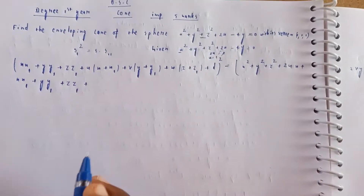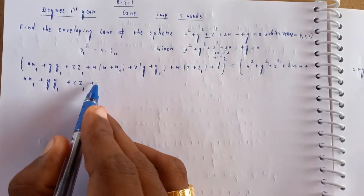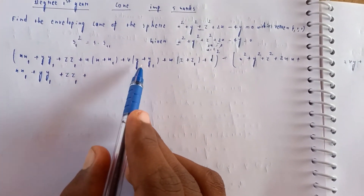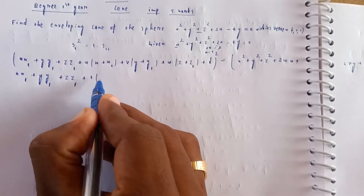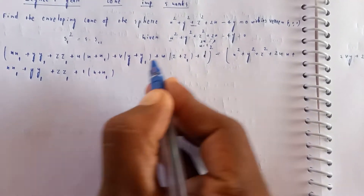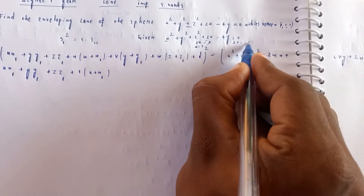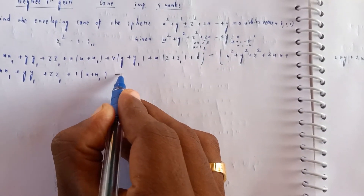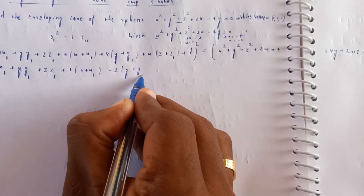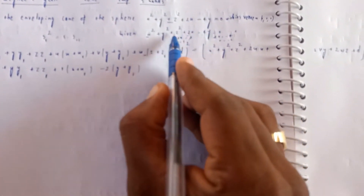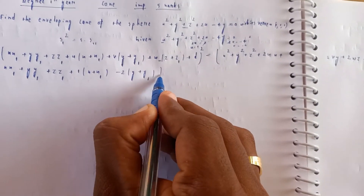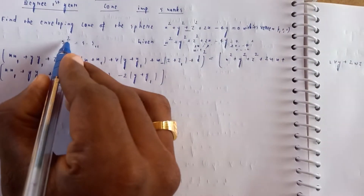This period is a sphere. Together the formula is T = xx₁ + yy₁ + zz₁ + u(x + x₁). Now from the sphere equation x² + y² + z² + 2x - 4y = 0, we identify the constants: u = 1, v = -2, w = 0, d = 0.